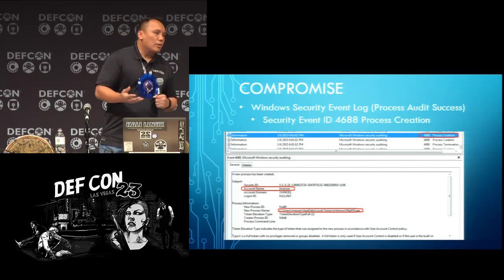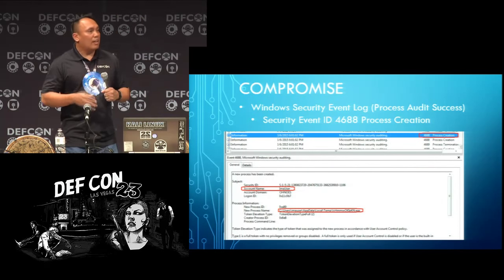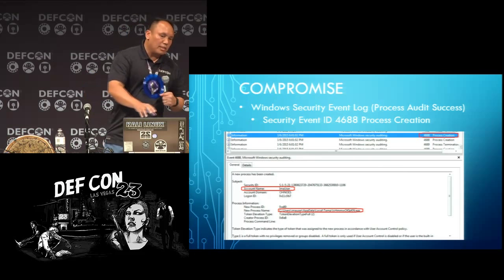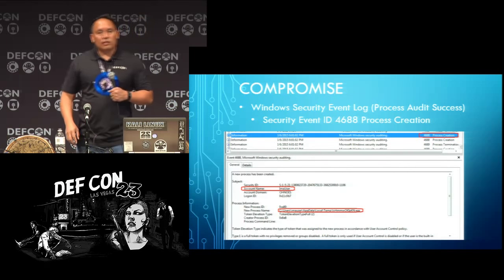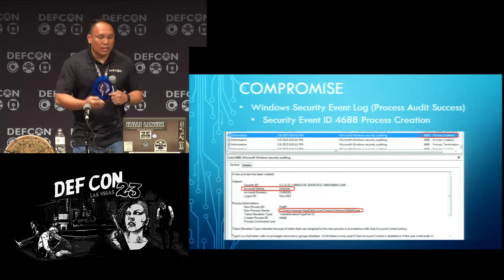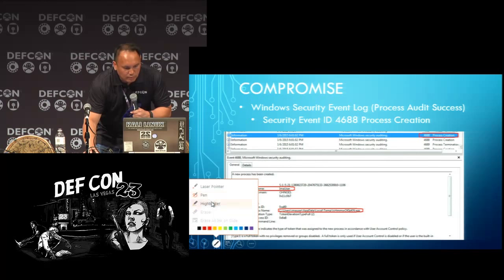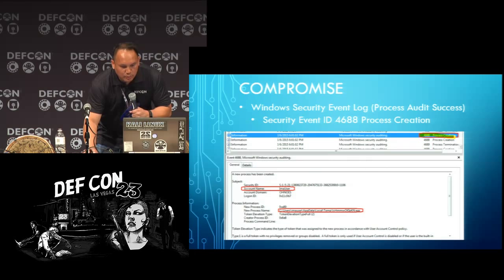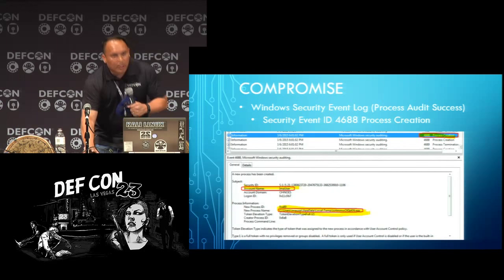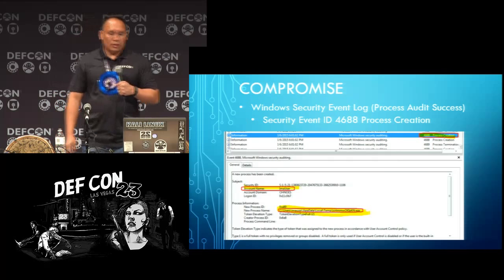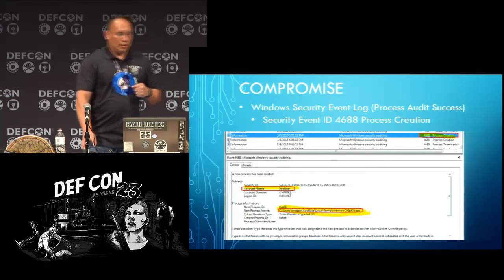What I'm going to start doing is showing you guys what kind of pieces of evidence you're going to find as you go through those stages I talked about — like the compromise stage. For the compromise stage, Windows Security Event Log, process auditing success — if you guys turn this on, this is what you'll see. Anytime somebody does something, you're going to see it. You'll see a process creation followed by who created that process and what was the name of the file that was executed. This is really cool because this is when I used Kali to create a Meterpreter shell — that's what it looks like. It left this artifact.